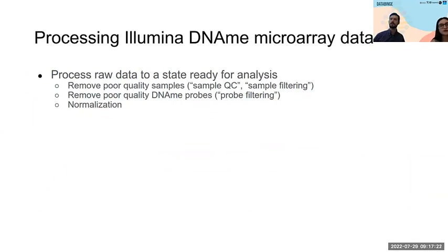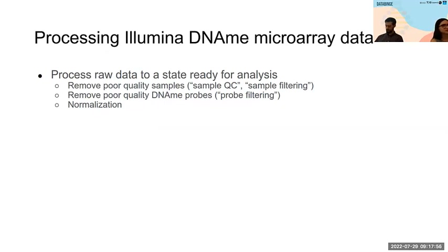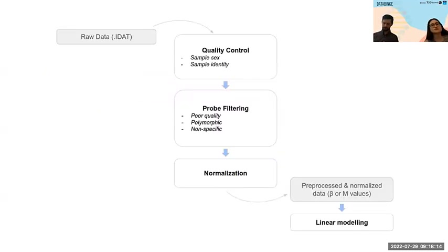Before we get into the code, here's an overview of what we'll be doing to the data. The primary steps when analyzing Illumina DNA methylation microarray data are: first, remove poor quality samples — samples that have failed due to contamination or sample swaps. Second, remove probes — we'll be using 'probes' and 'CpG sites' interchangeably throughout this workshop. Probes reporting poor quality data should be removed. Finally, you'll want to normalize your data.